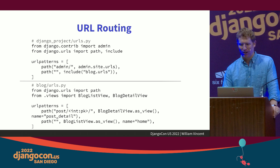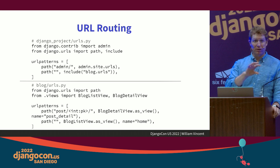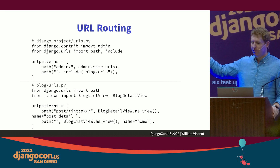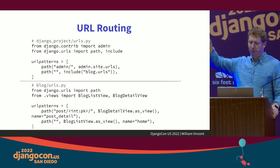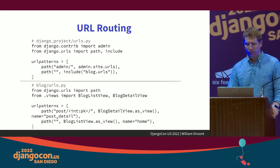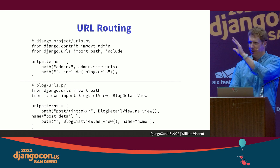URL routing — how do we match logic and information to a specific page? Django uses a `urls.py` file. There's one included in your project directory. You include your app's URLs below admin, then create your own `urls.py` in each app for the list and detail views.